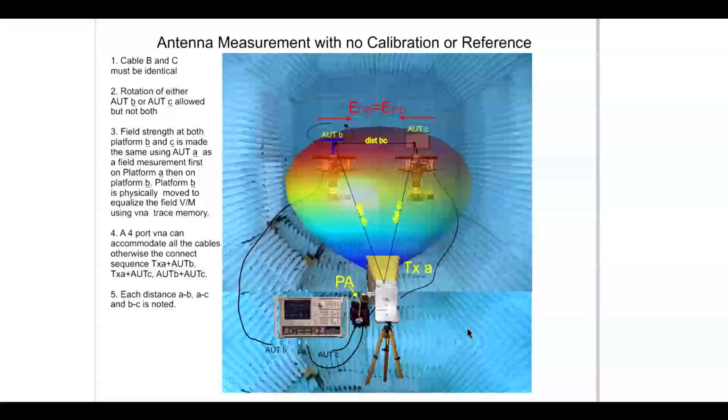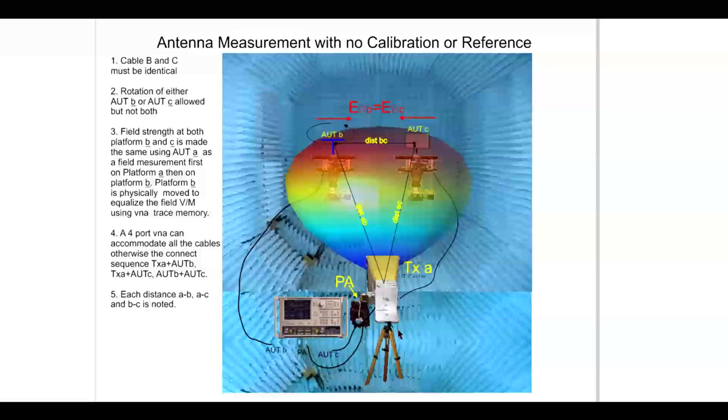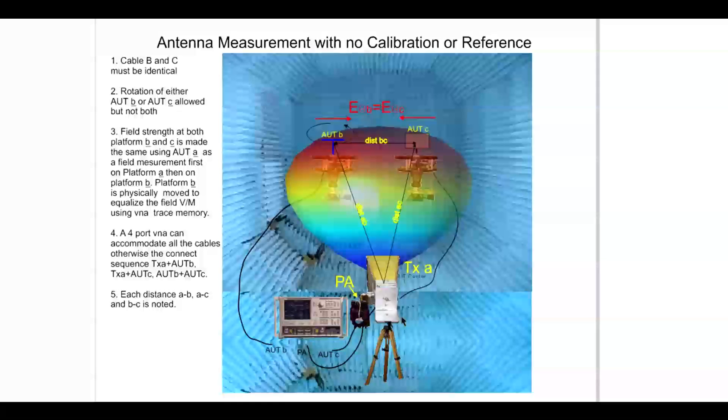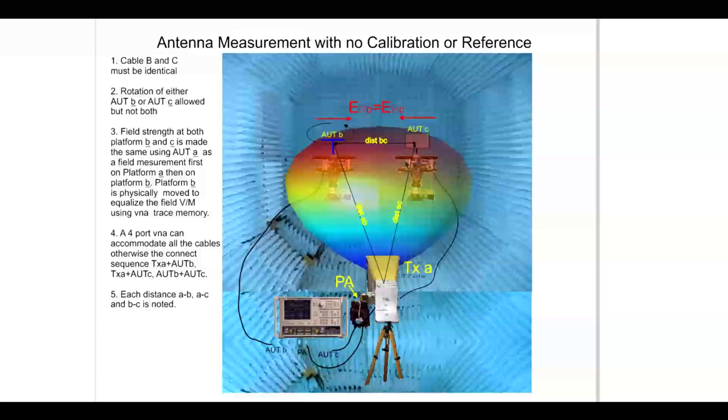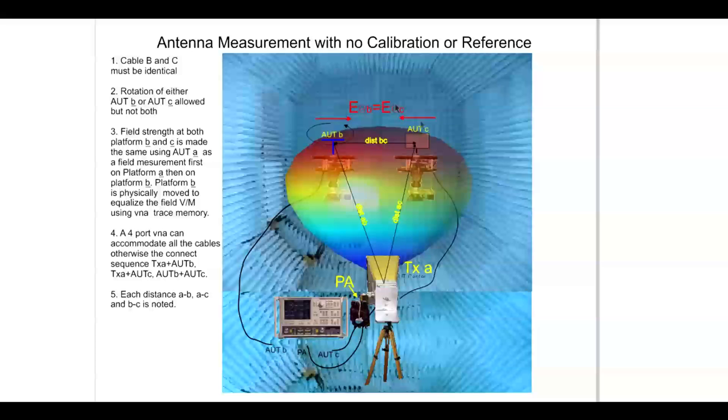So we can see how effective this method is for making raw measurements without system calibration and no reference data. This can be effective in either a chamber or even in an environment where a level of multipath is present. Once the fields in volt per meter are the same, then the corrections are accurate.